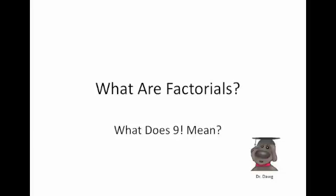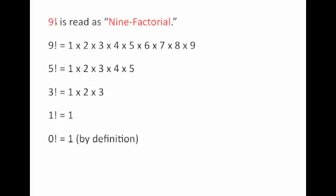This is a brief overview of what a factorial is — or in other words, what does nine exclamation point mean? What does nine factorial mean? Nine factorial literally means an expansion: one times two times three times four times five times six times seven times eight times nine. In other words, nine factorial is nine times eight times seven, all the way down to times one.